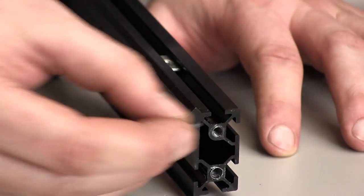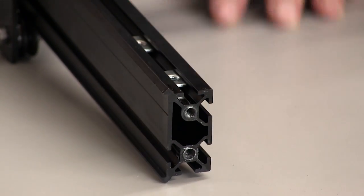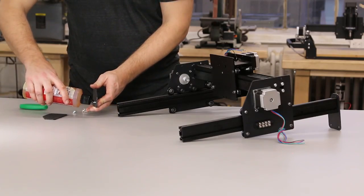Slide two insertion nuts into each piece of Y maker slide. We'll use these for belts later.